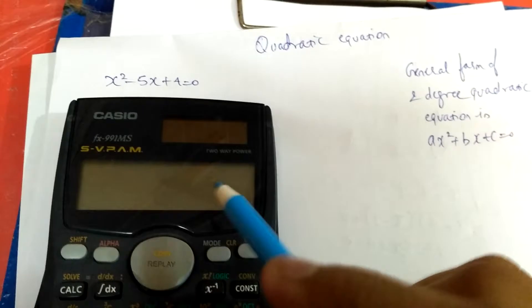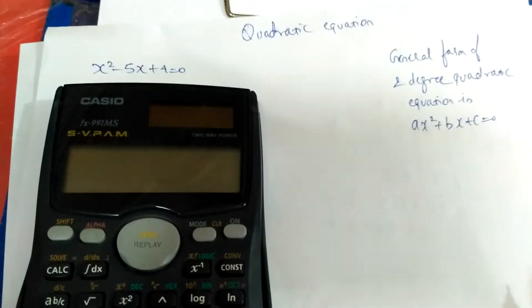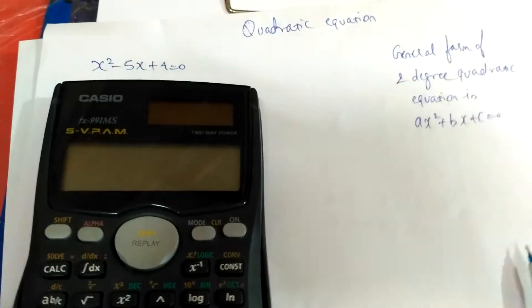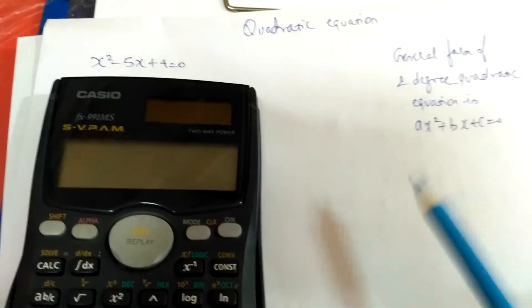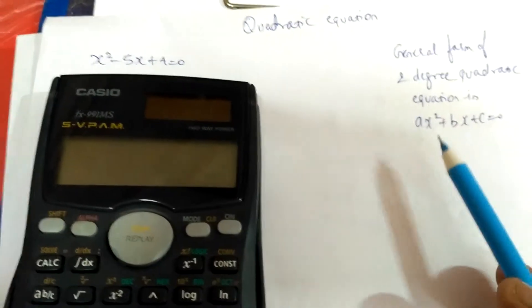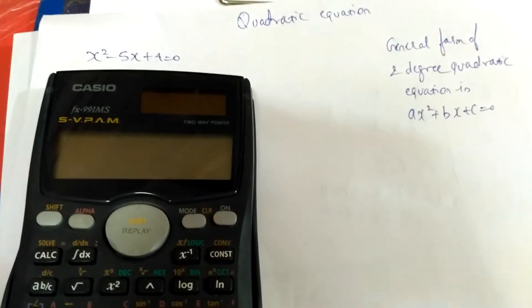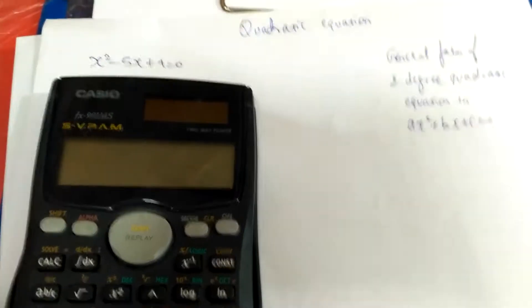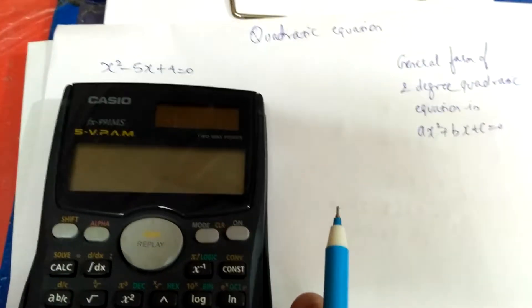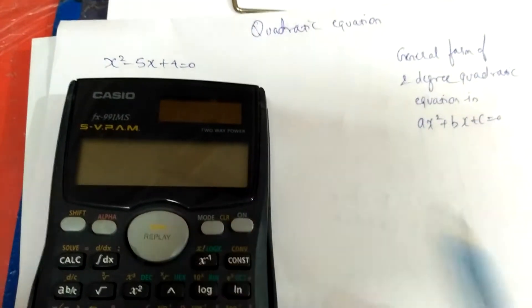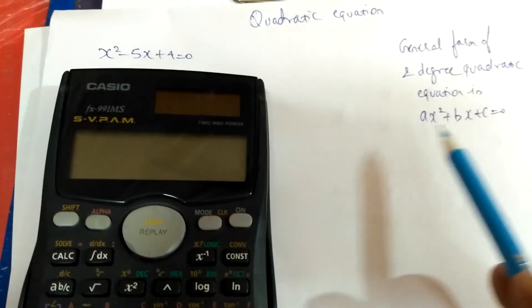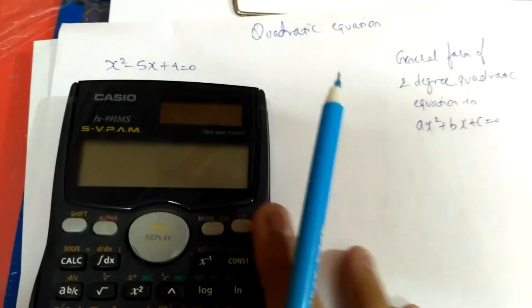I have already written one equation here which is x square minus 5x plus 4 equal to 0. On the right side of this page I have written the general form of a quadratic equation, a 2 degree quadratic equation which is ax square plus bx plus c equal to 0. Make sure when you solve a quadratic equation with the help of this calculator, it must be written in this general form.